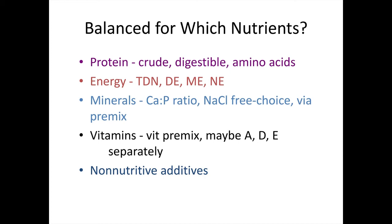Minerals are also very important to balance for. The one we're most concerned with in any feeding situation is the calcium to phosphorus ratio, which in general is often a 2:1 ratio. Providing salt (sodium chloride) is also important, as it provides both sodium and chloride and can be offered free choice. Salt can also be used as a vehicle to deliver other minerals and can be provided via a premix mixed into the whole diet or offered free choice for grazing cattle or sheep.